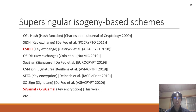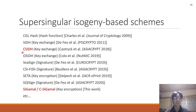And these are the supersingular isogeny-based schemes. The main result of our study is the proposal of C-GAMMA and CC-GAMMA. These schemes are based on the CSIDH key exchange. So next I explain the CSIDH key exchange.